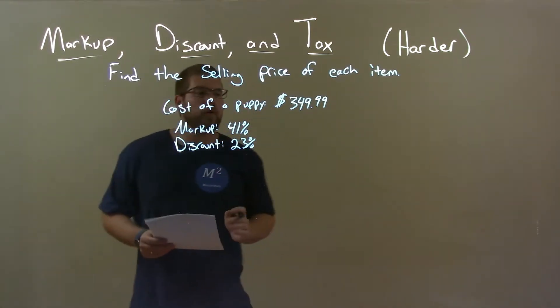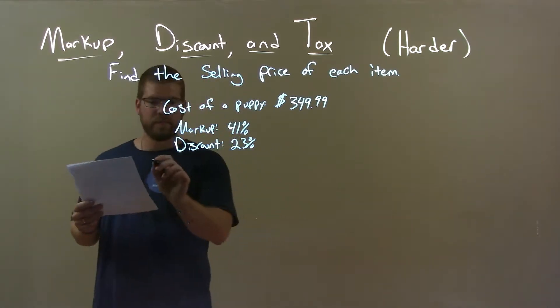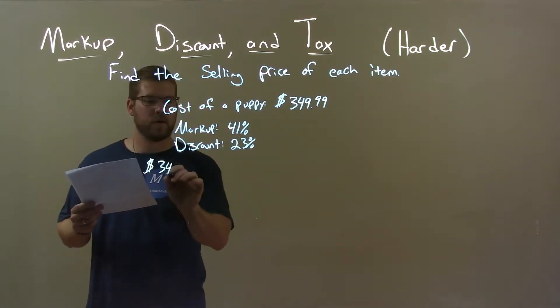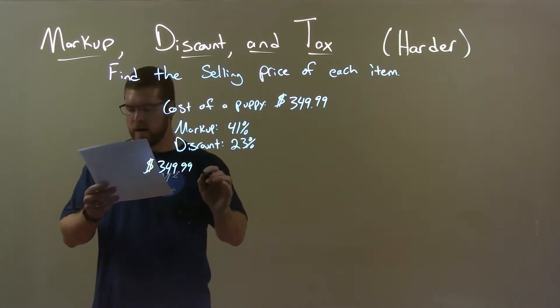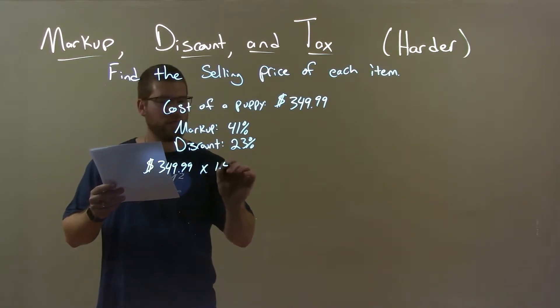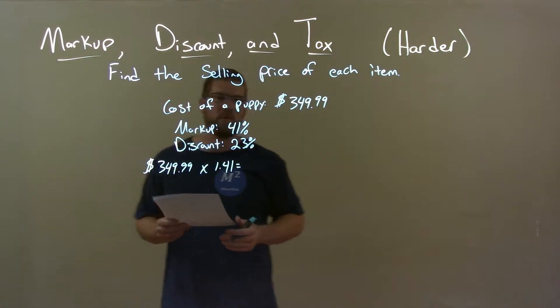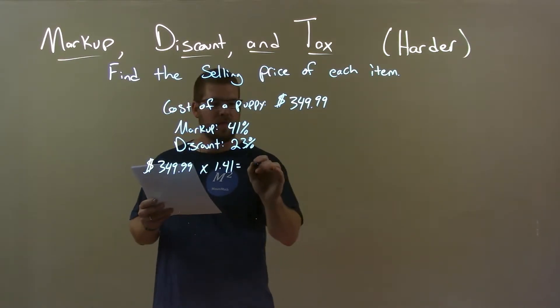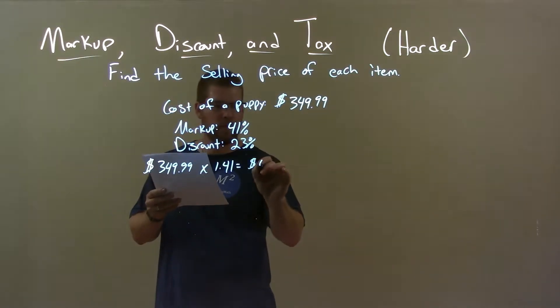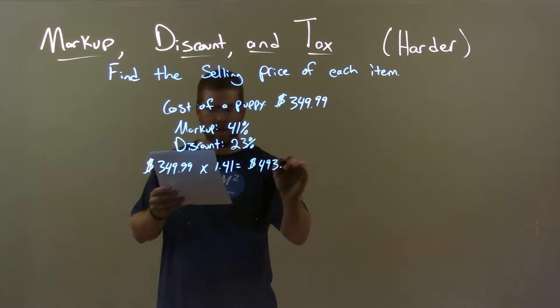So, we first take the cost of the puppy, $349.99, and multiply that by 1.41, which represents our 41% markup. This gives us a value of $493.49.